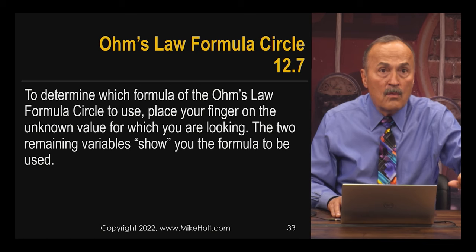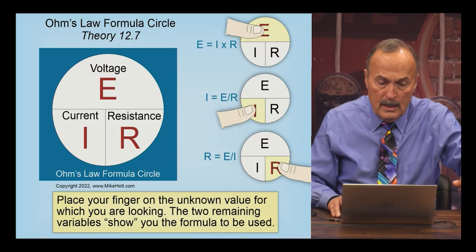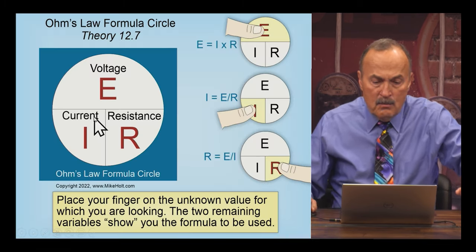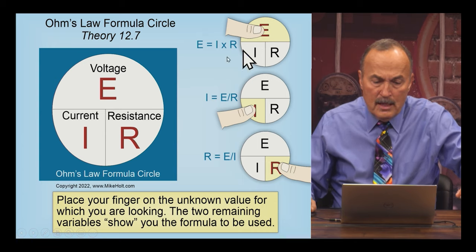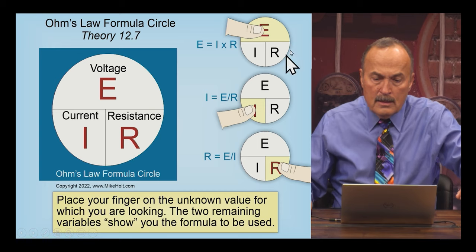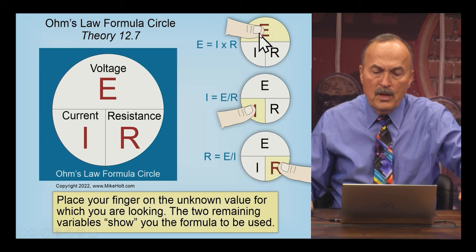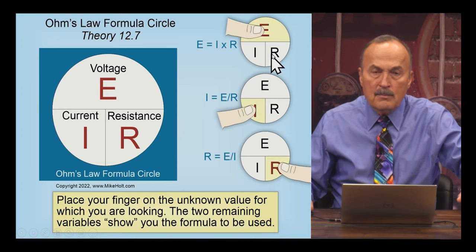Now, there's an Ohm's Law formula circle, and this concept is that if you have this E line IR, it's like, okay, well, if you're looking for E, you put your finger over E. Well, then it would be what? I times R.